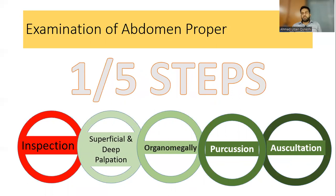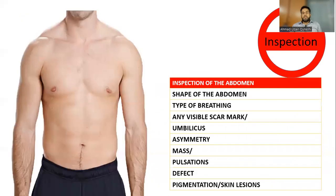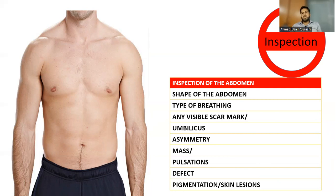In inspection, the first of the five steps, you need to inspect several things. First is the shape of the abdomen, which can be flat, distended, full, scaphoid, or show an abnormality. Second, the type of breathing is very important. Stand at the side of the patient, then move to the foot end to observe the movement pattern — it can be abdominal-thoracic or thoracic alone.